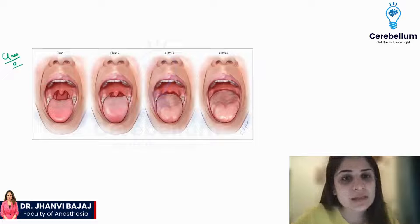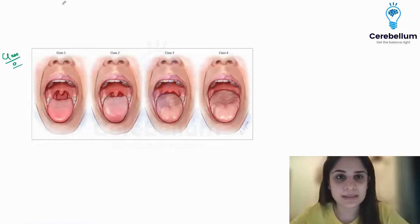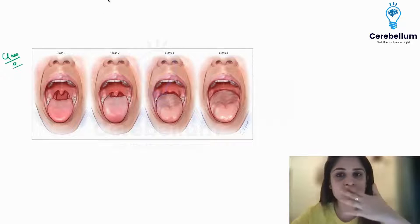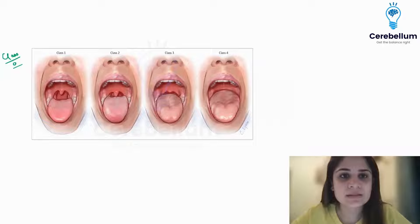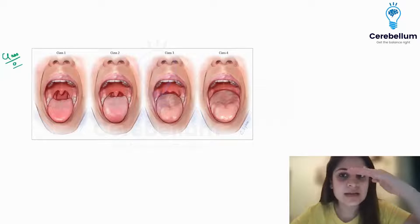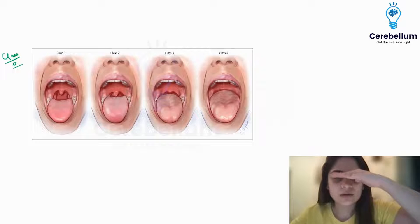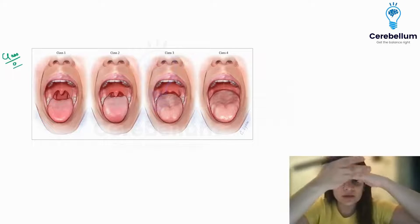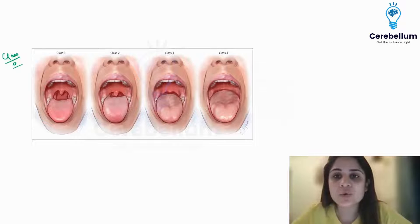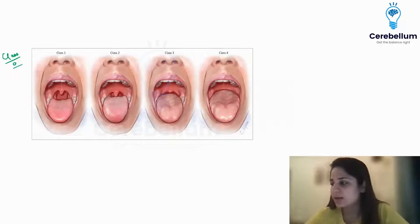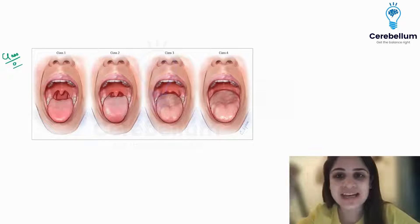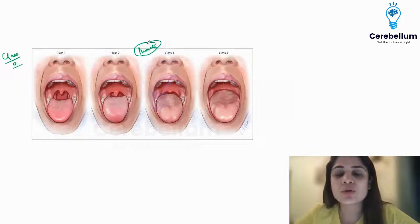The second question they ask is how do you perform the Mallampati test. You make the person sit in front of you, at your eye level should be his mouth level, so the patient will be a little bit on a height so that his mouth comes to your eye level. Then you ask the patient to open his mouth without making a sound — it should not be 'aah'. The patient should not phonate while opening his mouth.